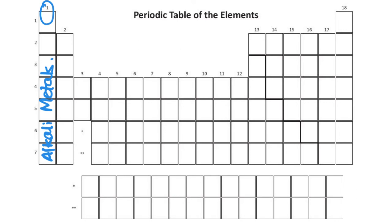Those that are in groups 3 through 12, these are our transition metals.